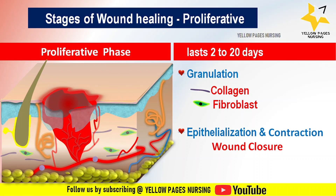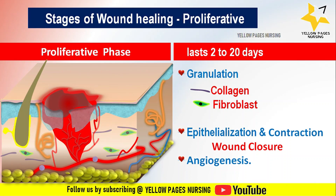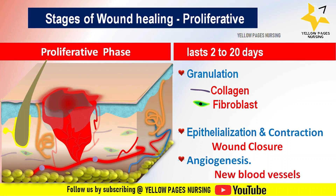Angiogenesis also occurs during the proliferative phase, where new blood vessels grow into the wound. This process is essential for delivering oxygen, nutrients, growth factors, and immune cells to the wound site.